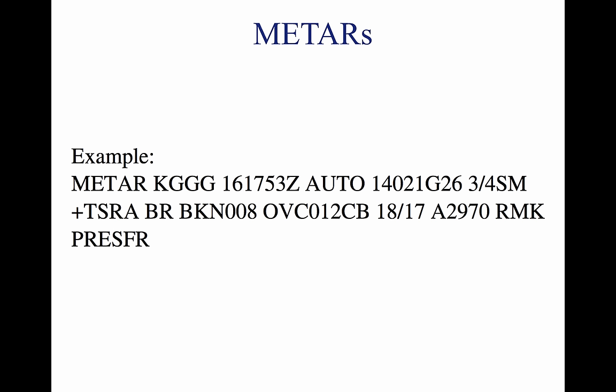3. Date and time of report — 161753Z, depicted in a six-digit group. The first two numbers stand for the day of the month; the last four stand for time converted to Zulu time, depicted at the end with the letter Z. 4. Modifier — AUTO denotes the METAR came from an automated source or that the report was corrected. If AUTO is listed, the report came from an automated source, also listing A01 or A02 in remarks to indicate the type of precipitation sensors. When the modifier COR is used, it identifies a corrected report sent to replace an earlier report that contained an error.